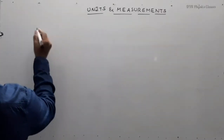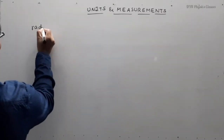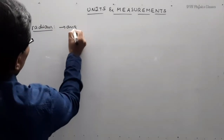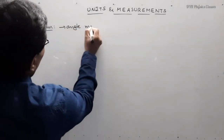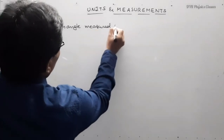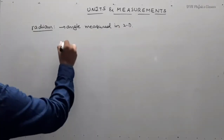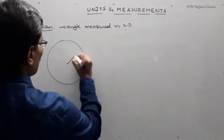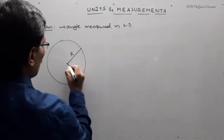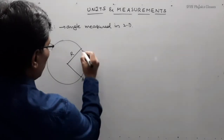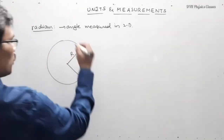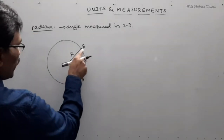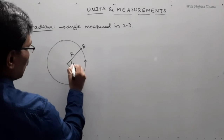Let us briefly see what is radian and what is steradian. Radian is angle measured in two dimensions. For example, if a particle is moving in a circular path of radius r, let the particle initially be at point A and after some time it has gone to position B. The angle made by the initial and final position at the center of the circle, let it be theta.